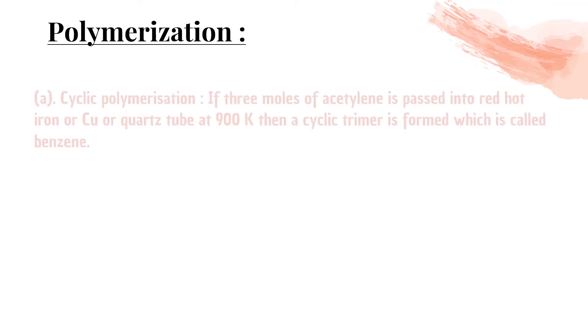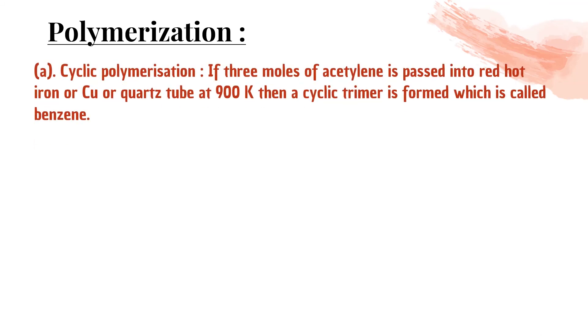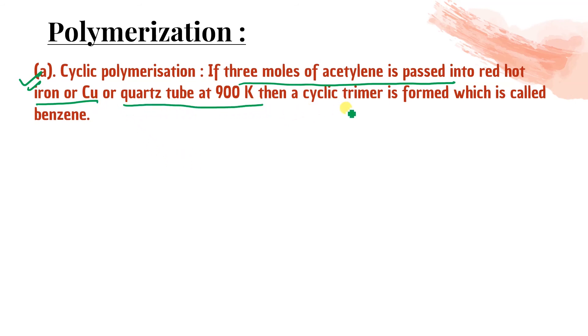Now polymerization: small molecules combine to form a larger molecule. Acetylene can undergo linear polymerization to form polyacetylene, or cyclic polymerization. For cyclic polymerization: if three moles of acetylene are passed through a red hot copper, iron, or quartz tube at 900 K, the cyclic trimer formed is benzene.